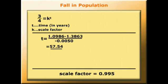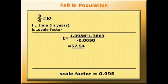You could do a quick check on the calculator to confirm your result: 0.995 to the power of 57 equals 75 approximately.